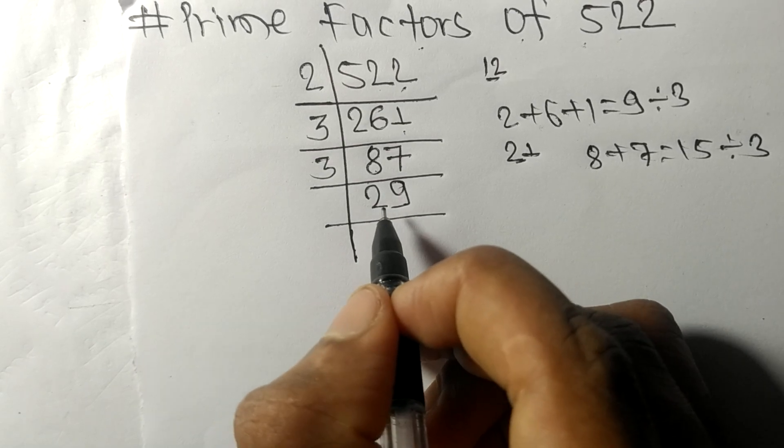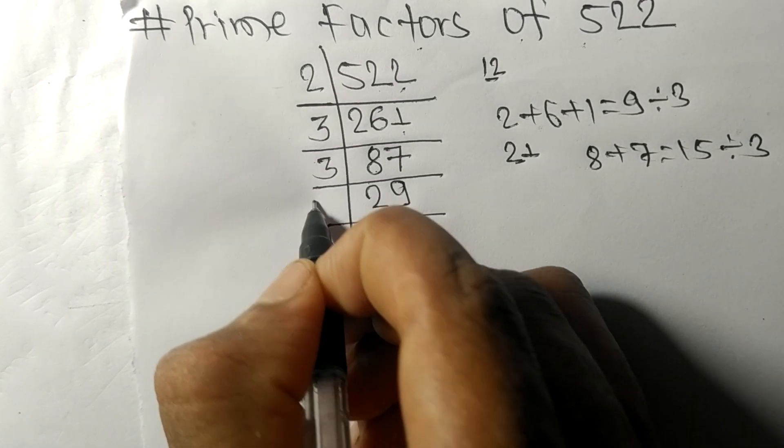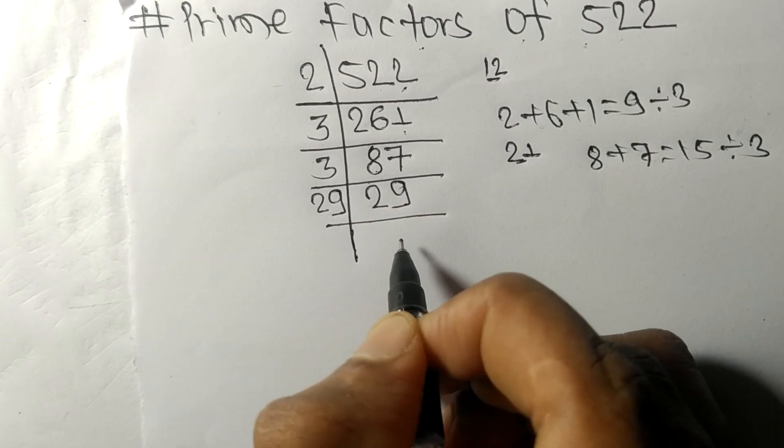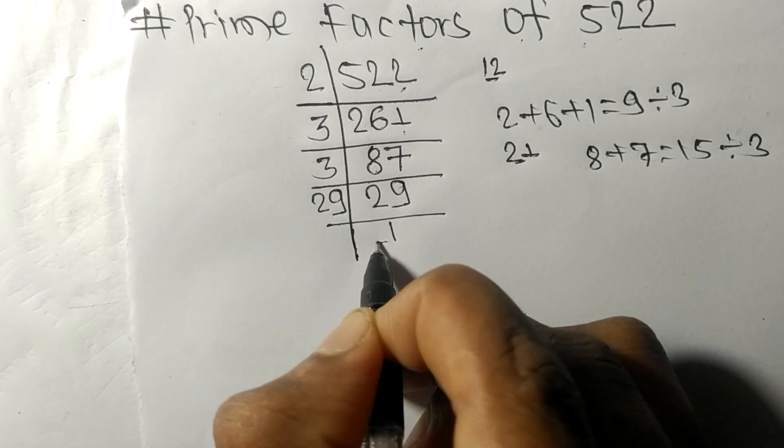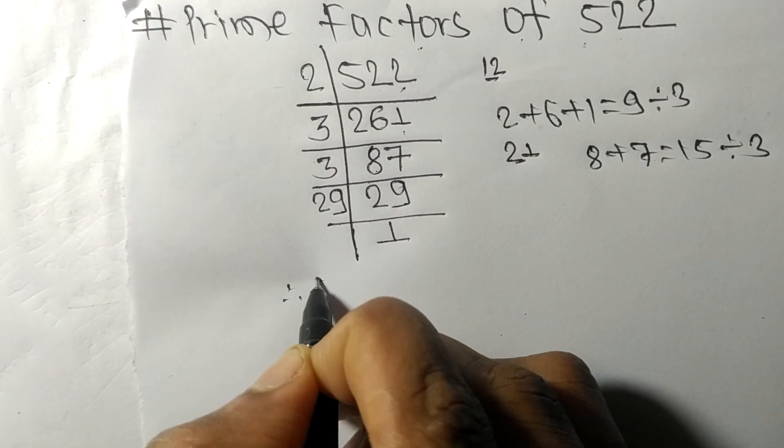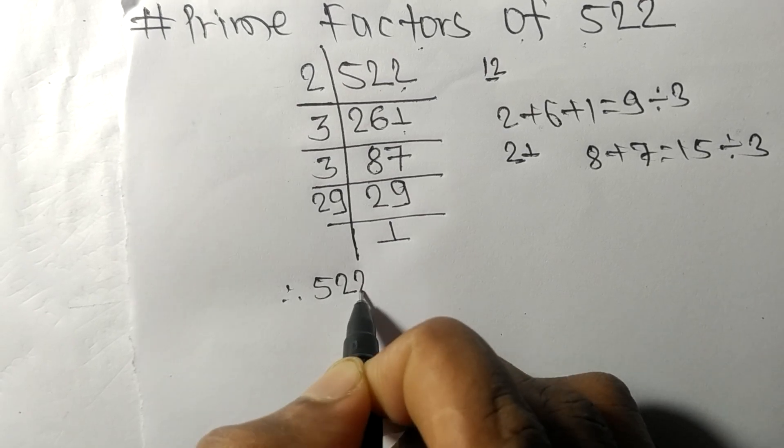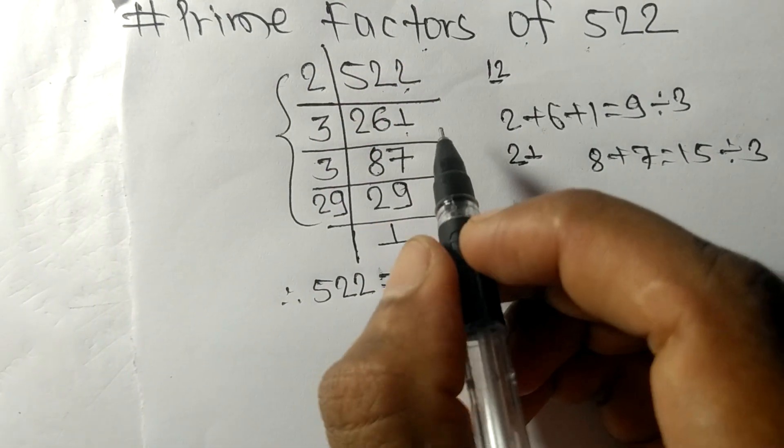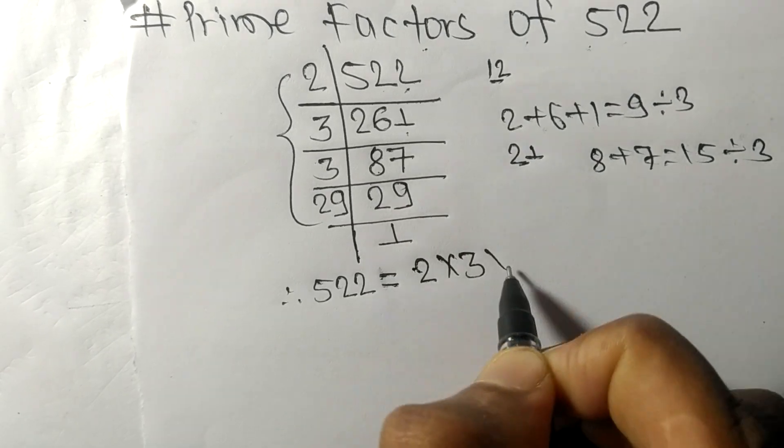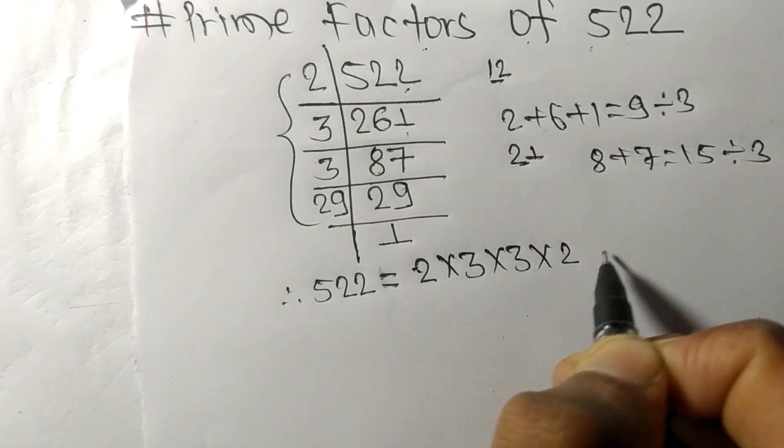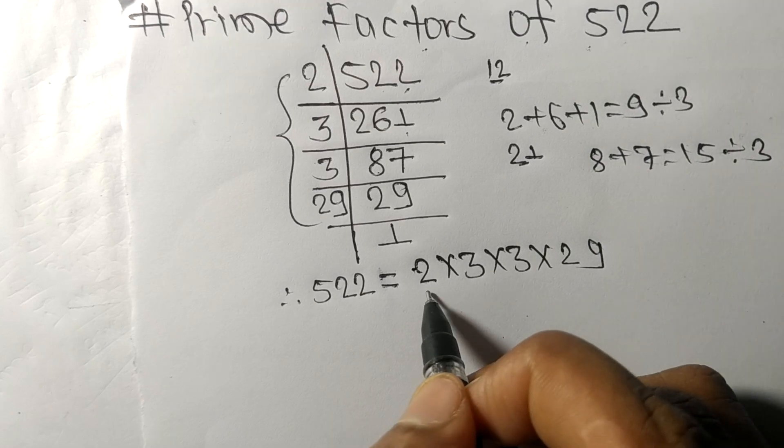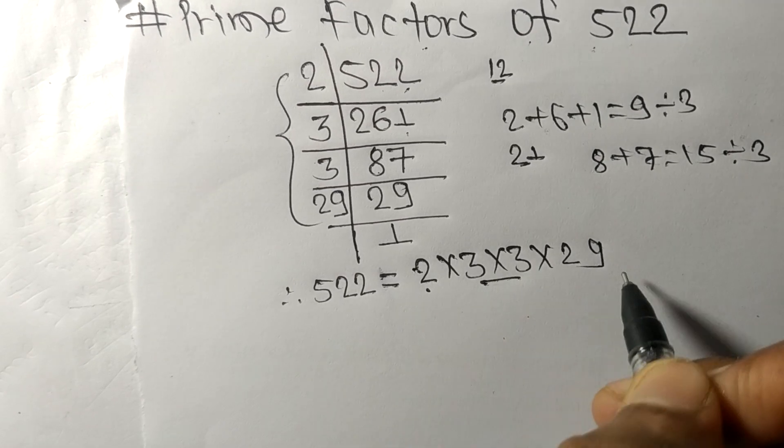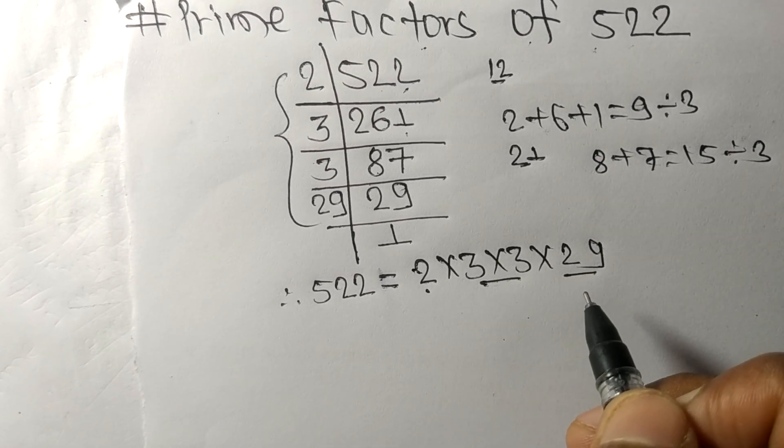29 is a prime number, so it is divisible by 29 itself, and we get here 1. Therefore, 522 is equal to 2 times 3 times 3 times 29. So 2, 3, and 29 are the prime factors of 522.